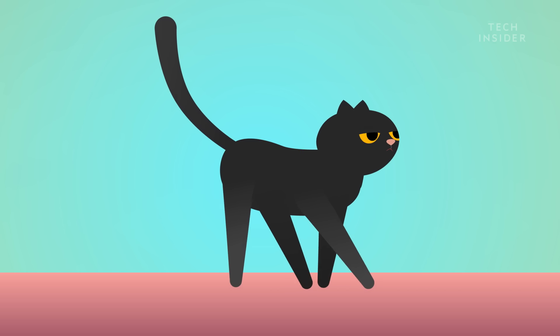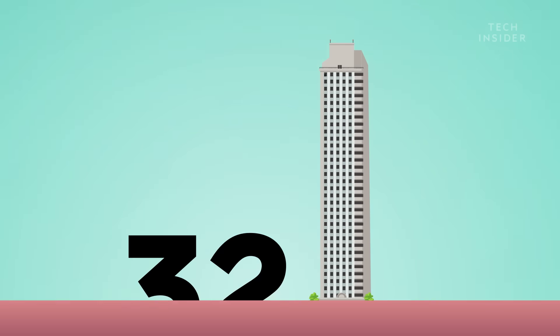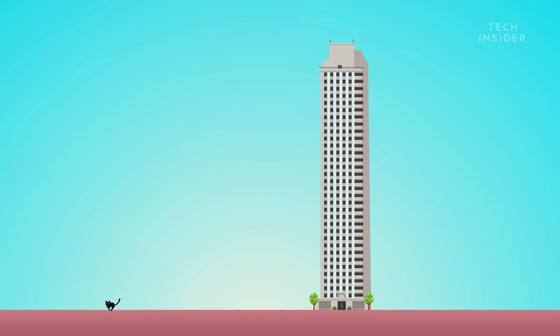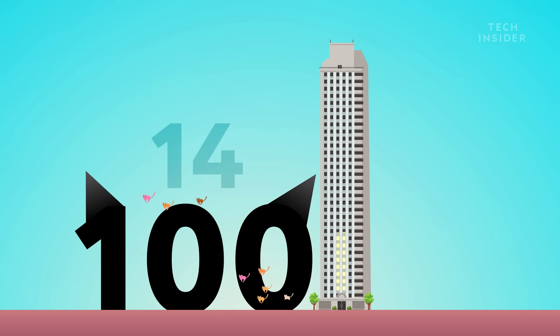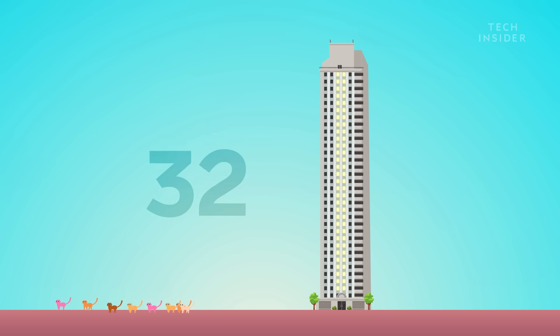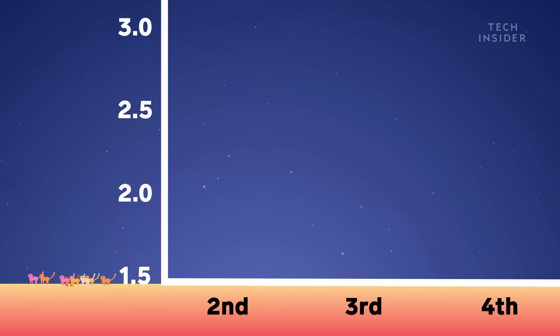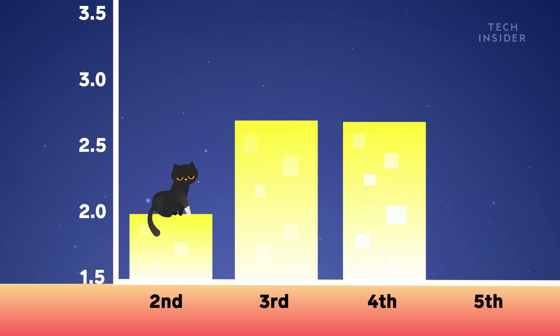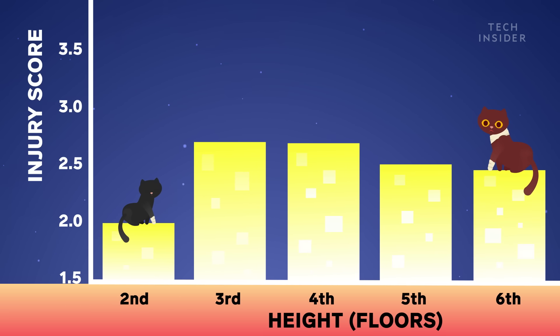But landing feet first isn't always the best strategy, like if you're falling from 32 stories up. To figure out how cats manage that perfect landing every time, a series of studies looked at over 100 cats' falls from 2 to 32 stories up. Comes as no surprise that cats who fell from the second floor had fewer injuries than cats who fell from the sixth floor.